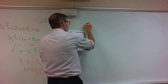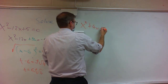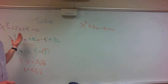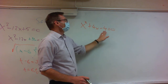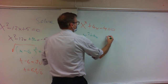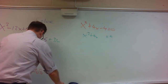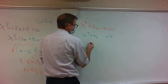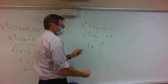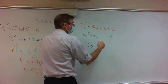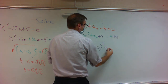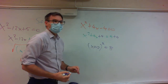Now you try: x squared plus 4x minus 4 equals 0. Do the exact same thing. You have an x squared and an x — move that number over. So that gives me x squared plus 4x equals 4. Now complete the square: put parentheses, figure out what goes inside — half of 4 is 2. So we get x plus 2 squared. Square the 2 to get 4, add it to both sides, giving 8.